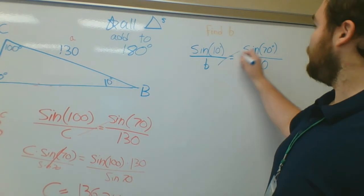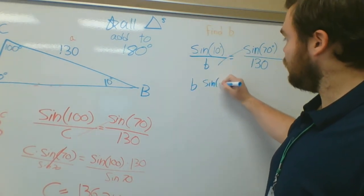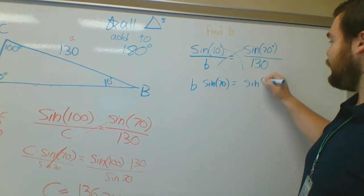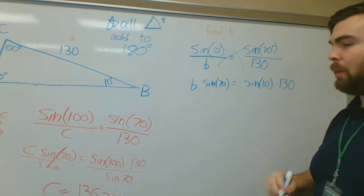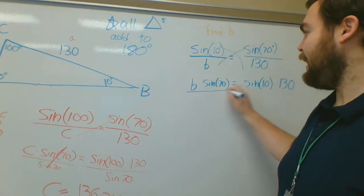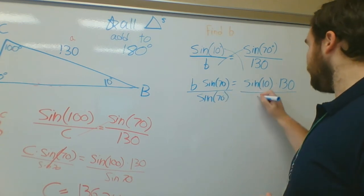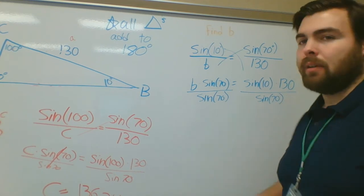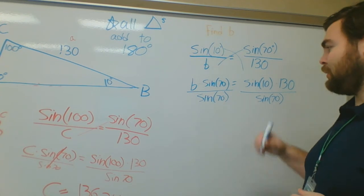So, we'll start simplifying here. I'm going to cross multiply. So, B times sine of 70 is equal to sine of 10 degrees times 130. I could simplify that or I can get B by itself now by doing this. Divide both sides by sine of 70. Get B by itself. This will give you a more accurate answer. And when it comes to Khan Academy, we have to put in a more accurate answer a lot of times. This will usually be better.